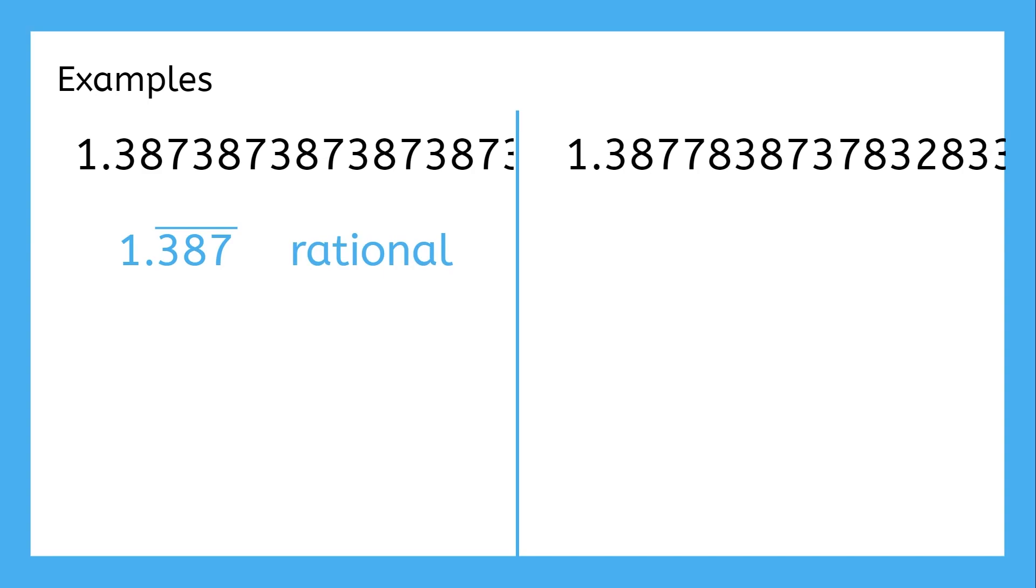Repeating decimals are rational. It may not be very intuitive, but this repeating decimal could be written as 1,386 over 999. Okay, so then what about the other one?